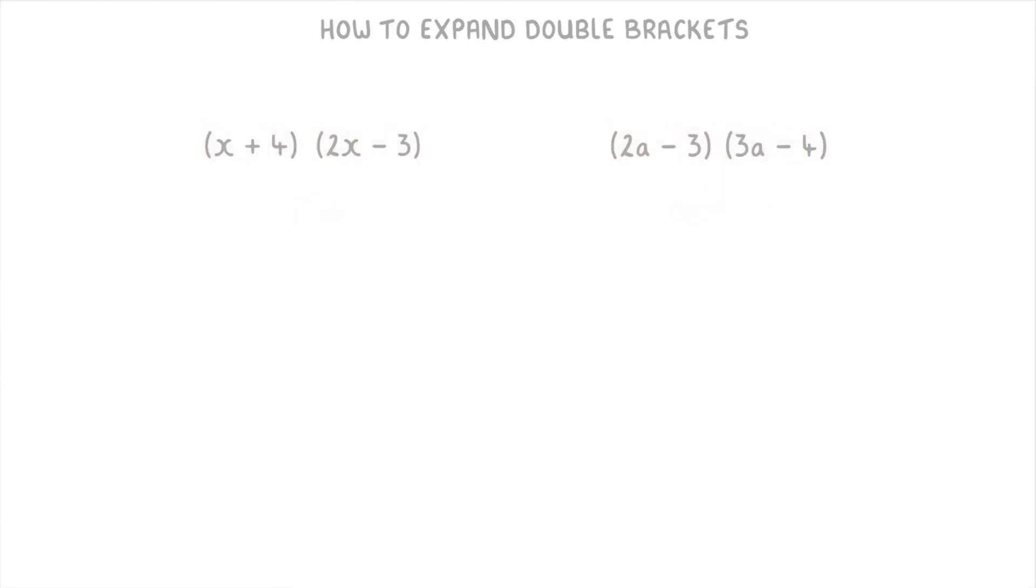The best way to do this is to start off with the first term of the first bracket. So for this question on the left, that would be the x, and you want to multiply that by all of the terms in the second bracket, so by the 2x and by the minus 3.